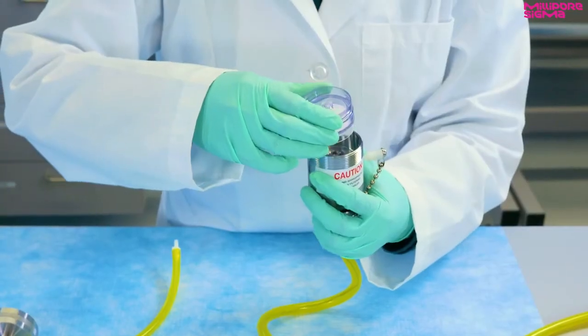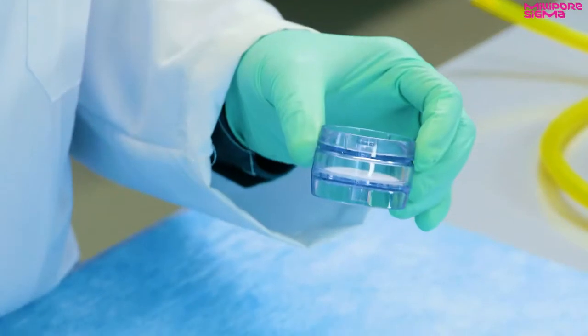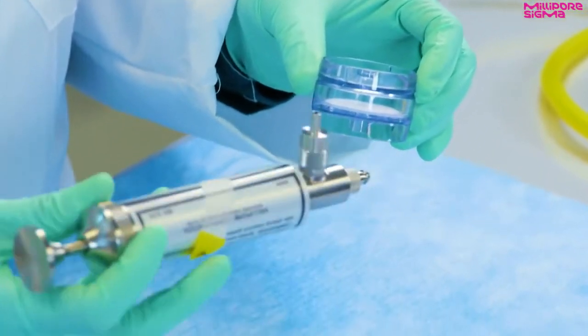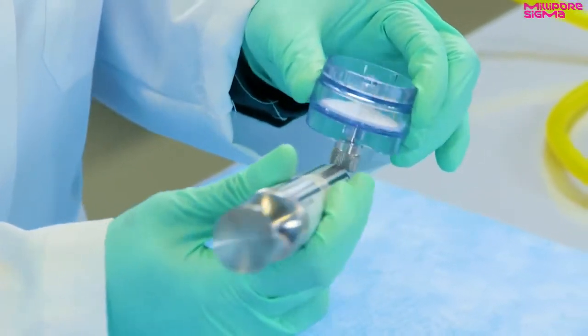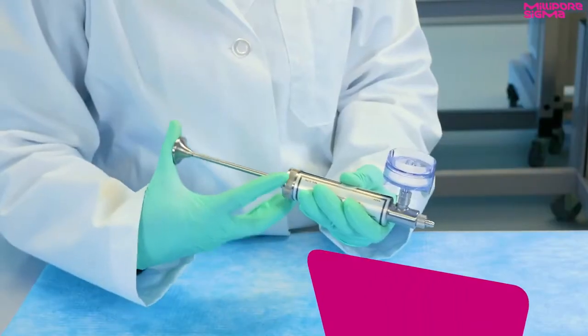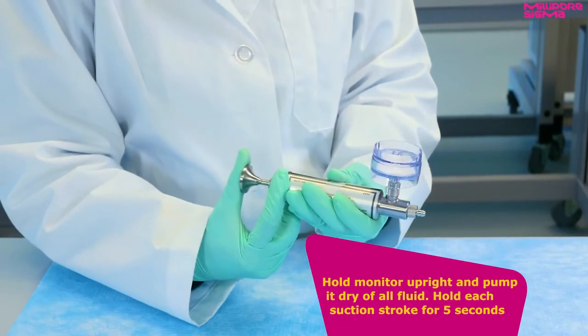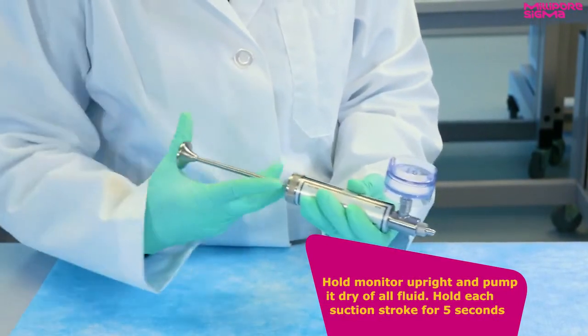Remove the monitor from the sampler. To dry the monitor, place the monitor onto the side port of the syringe with the spoke side down. Hold the monitor upright and pump it dry of all fluid. Hold each suction stroke for five seconds.